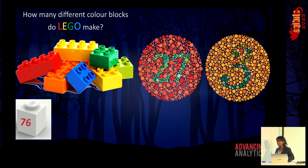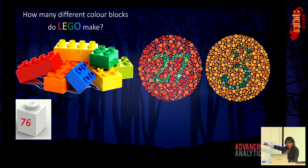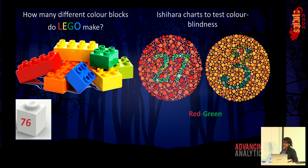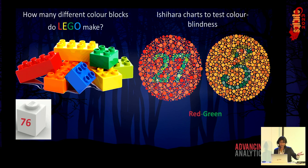Another quick question before I get into my talk. Can anyone see those digits in the slide? So you probably see where I'm going with this talk. If you can't see the numbers behind those charts — it's an Ishihara chart, a chart to test colorblindness — then you're probably red-green colorblind, which is a very common colorblindness.